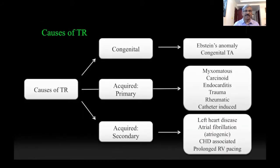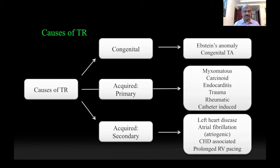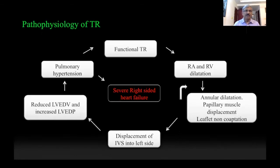The causes of tricuspid regurgitation can be considered as congenital or acquired. The acquired can be either primary or secondary. 75% to 80% of tricuspid regurgitation is secondary in nature. The most common cause is pathology on the left side of the heart. There is also a peculiar situation called iatrogenic TR due to chronic atrial fibrillation, where the RA dilates but the RV more or less maintains its normal anatomy. Some congenital heart diseases such as VSD can lead to tethering of the septal leaflet, which in turn can cause acquired secondary tricuspid regurgitation.